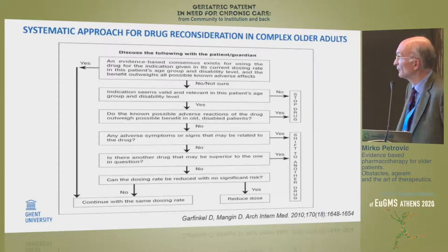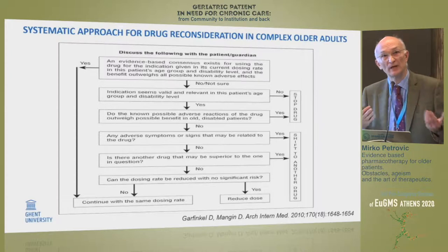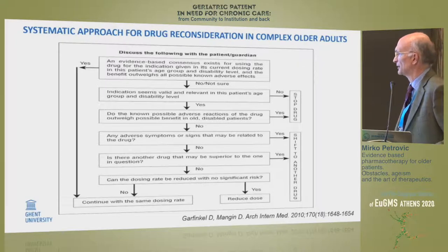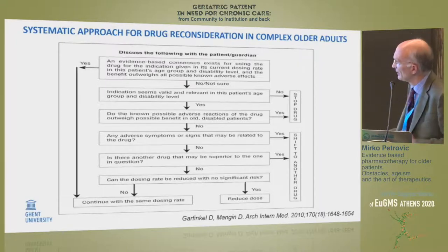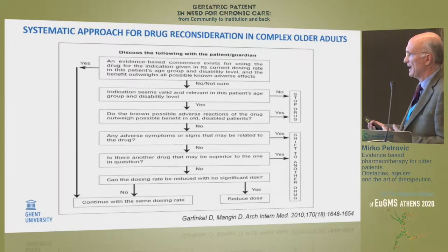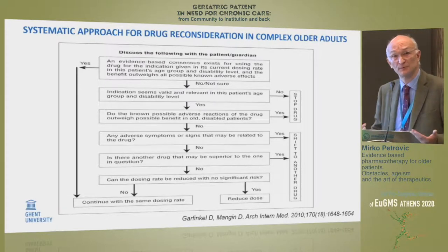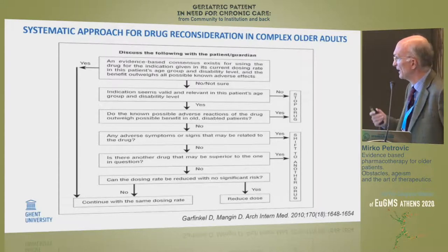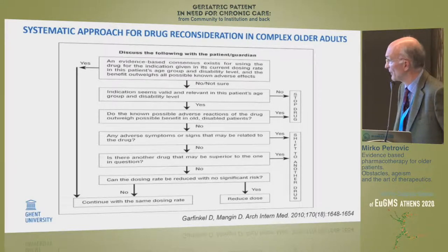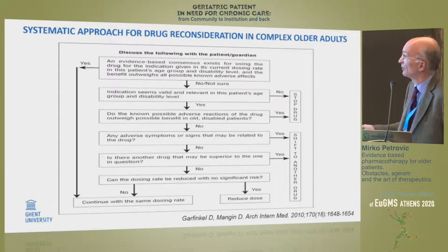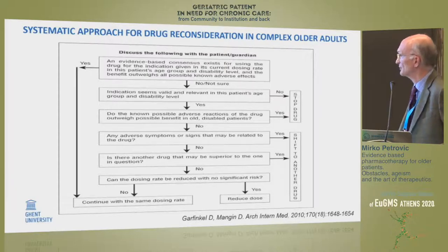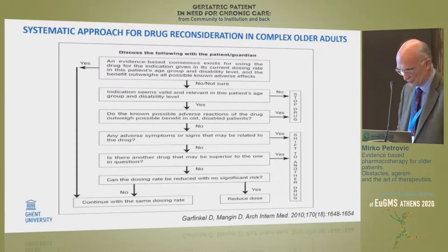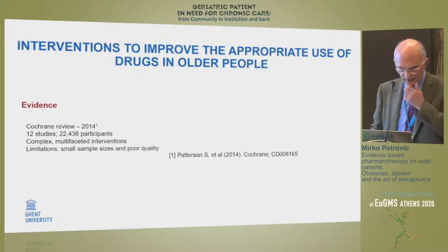From the pharmacoeconomical point of view, you should think: are there any better, cheaper, simpler alternatives? If you have gone through all these questions and are persuaded that the drug is appropriate, then you can continue with the same dosing in the related patient. If there is any problem at one stage of this algorithm, then it is appropriate to reduce the dosage or even to stop the drug. Critical analysis is really inevitable.